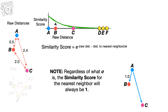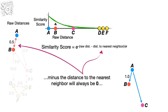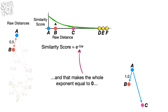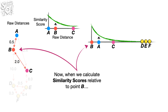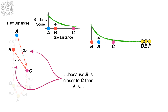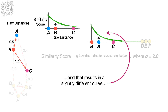Note, regardless of what sigma is, the similarity score for the nearest neighbor will always be 1. This is because the raw distance to the nearest neighbor minus the distance to the nearest neighbor will always be 0, and that makes the whole exponent equal to 0. And e, or anything else for that matter, raised to the 0 power is 1.